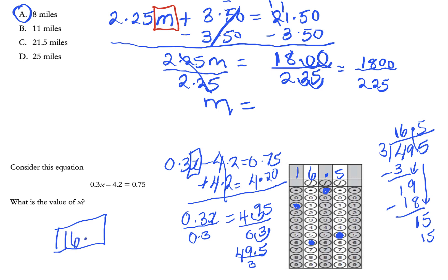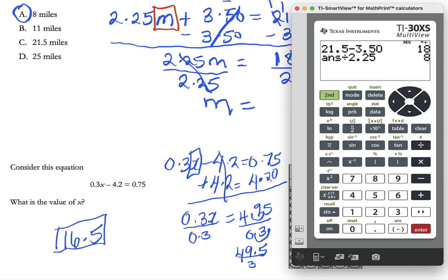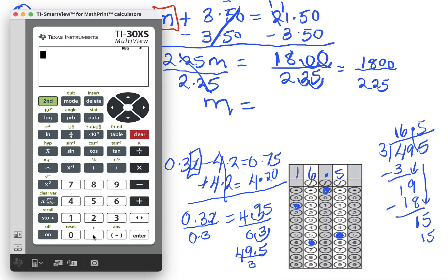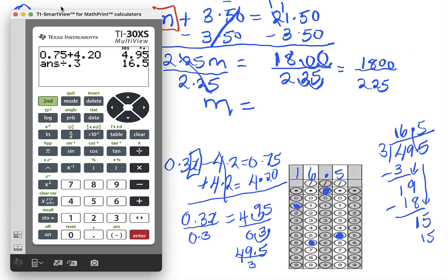Again if you're using the calculator, basically you would have the 0.75 and you would add the 4.2, you get 4.95, and then remember your last step was to divide that by 0.3 and you get your 16.5. So I showed you basically if it came on a non-calculator what to do and if it actually came on a calculator section what you would do.